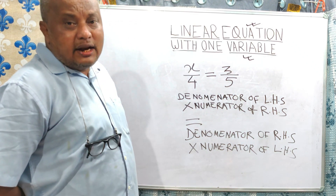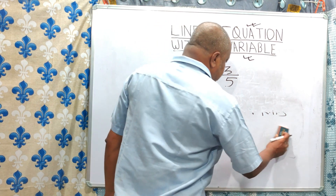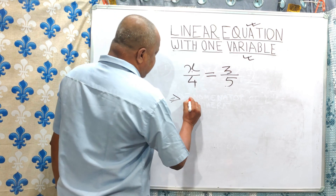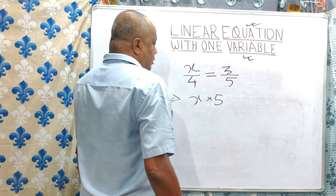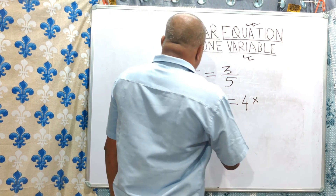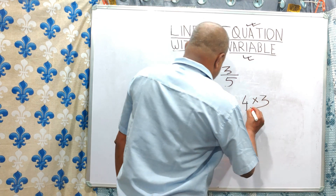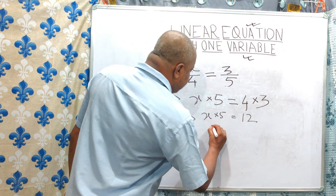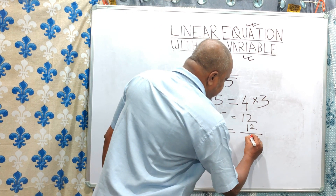This rule is called cross multiplication. Now we apply this formula to X by 4 equals 3 by 5. Numerator of left-hand side (X) multiplied by denominator of right-hand side (5) equals denominator of left-hand side (4) multiplied by numerator of right-hand side (3). So X times 5 equals 12, and X equals 12 by 5.